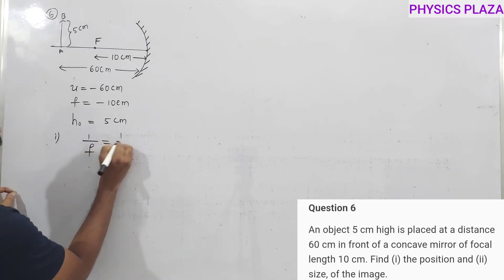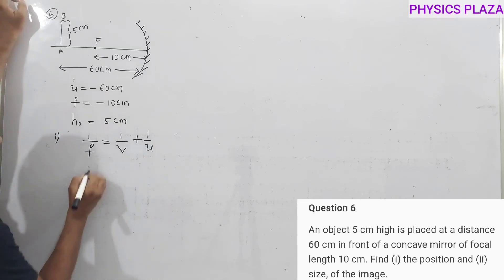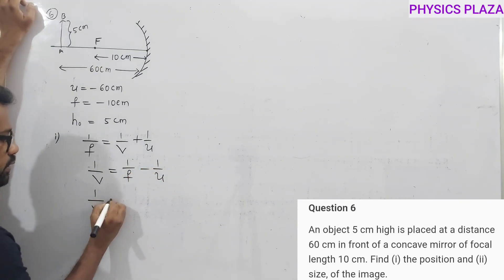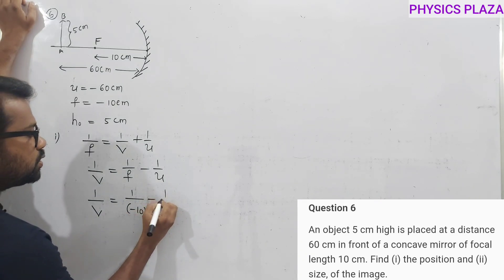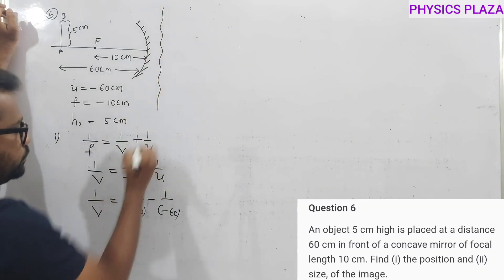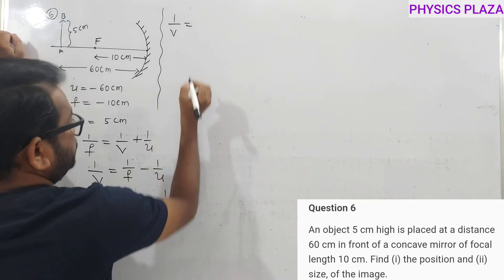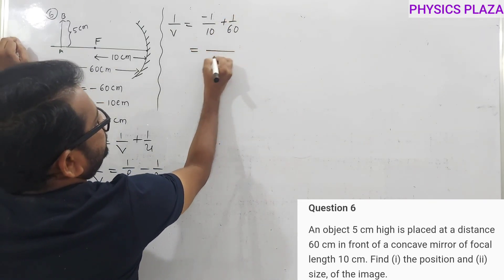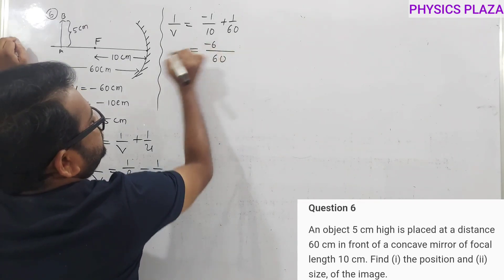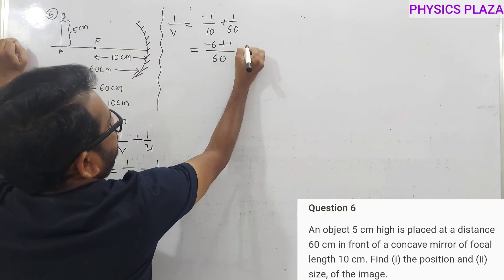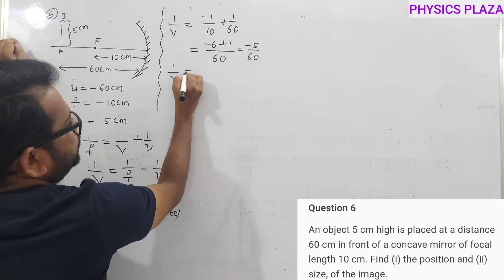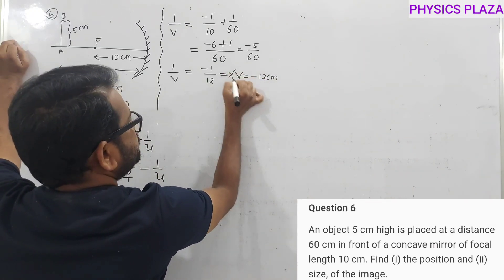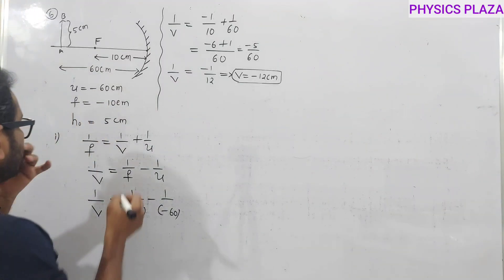Using 1/v = 1/f − 1/u: 1/v = 1/(−10) − 1/(−60) = −1/10 + 1/60. Taking LCM of 60: 1/v = −6/60 + 1/60 = −5/60 = −1/12. Therefore v = −12 centimeters.